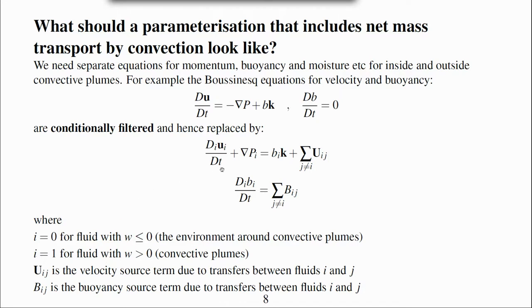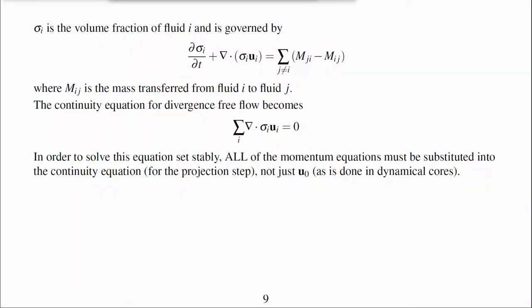There are separate velocities, pressures and buoyancies for each fluid. Capital U_ij is the source term in the velocity equation due to transfers between fluids and capital B_ij is the source term in the buoyancy equation due to transfers. σᵢ is the volume fraction of fluid i and is governed by this transport equation, advected by the velocity in fluid i and with transfers of mass M_ji from fluid j to i and M_ij from i to j.